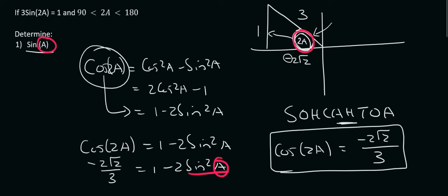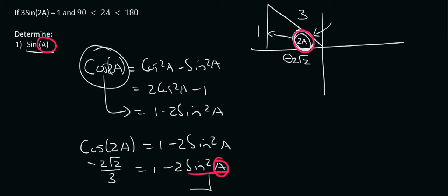So what I'm going to do is I'm going to move this over to the left and I'm going to move this over to the right. So we're going to end up with 2 sin squared A equals to 1 plus 2 square root 2 over 3.